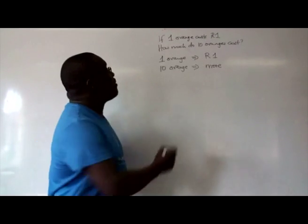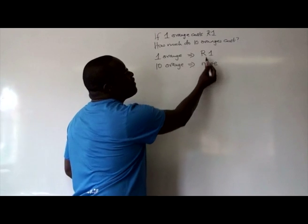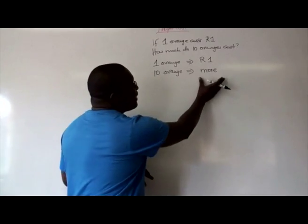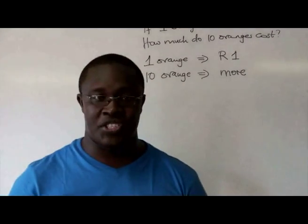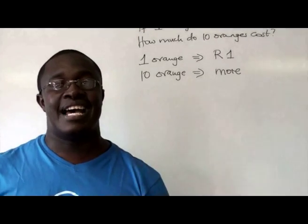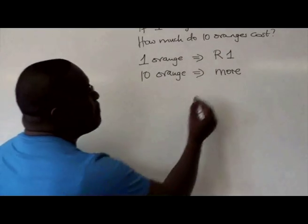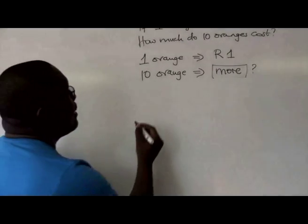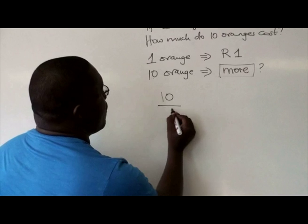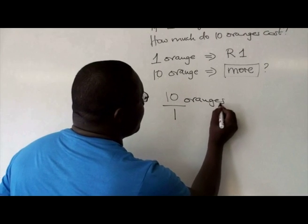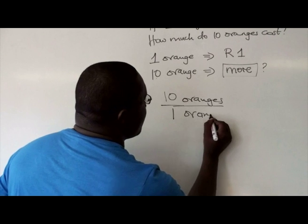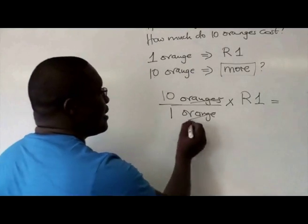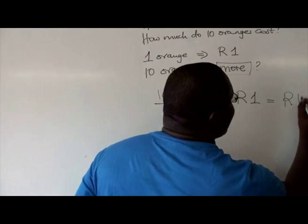So putting it mathematically now, we're saying one orange implies that you're going to pay one rand. Ten oranges implies that you're going to pay more money. So because when the number of oranges increases, the amount of money you pay also increases, that means that the cash and the number of oranges are directly proportional. Increasing one also increases the other. So when we say more, how much is more? We're going to say ten oranges over one orange times one rand, which is equal to, so these two cancel out, so it's ten times one, which is ten rand.